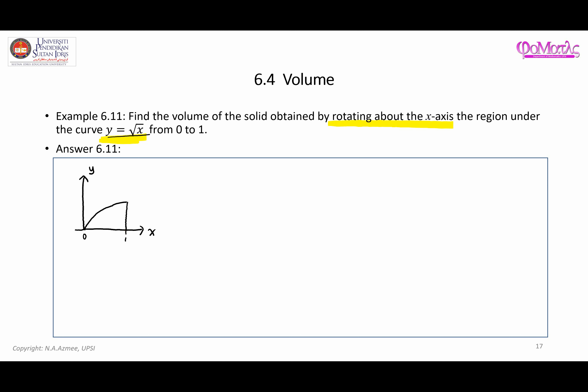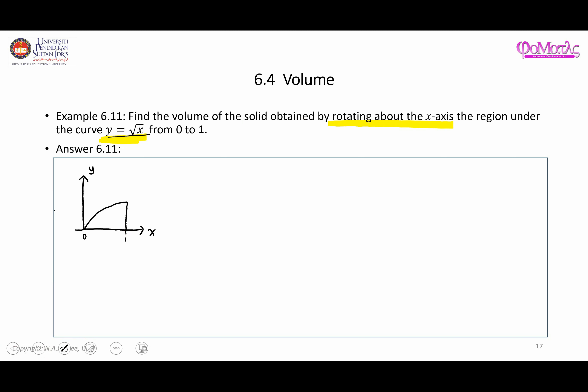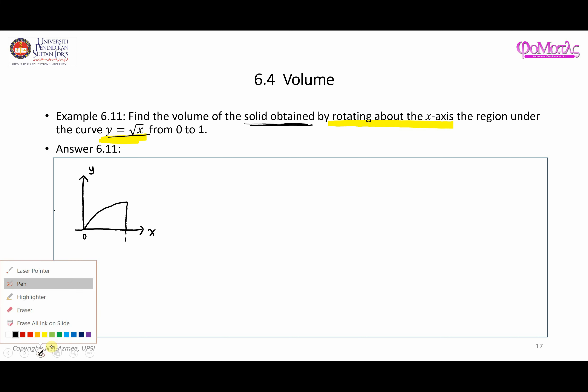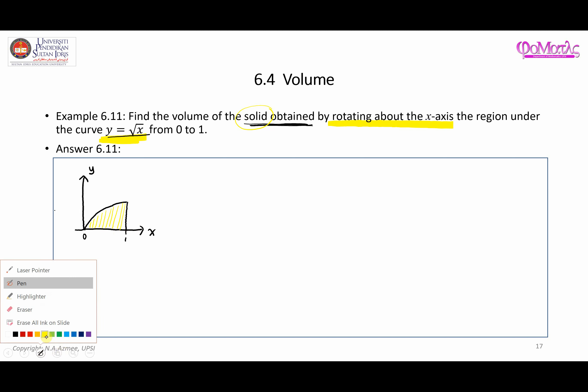Based on the sketch, the solid is constructed by rotating the region under the curve about the x-axis. This is the region under the curve, and to get the solid you rotate this region with respect to the x-axis — the x-axis acts as the axis of rotation, like a pillar.